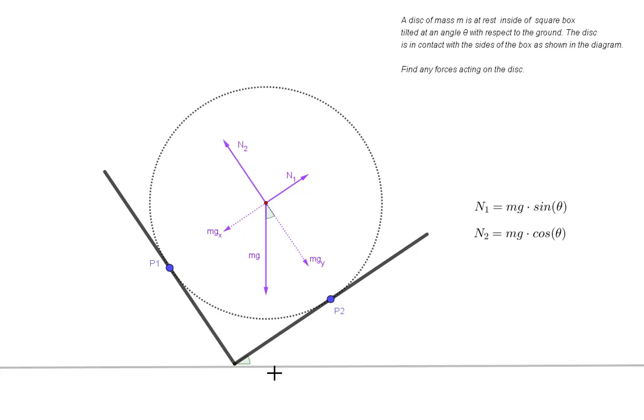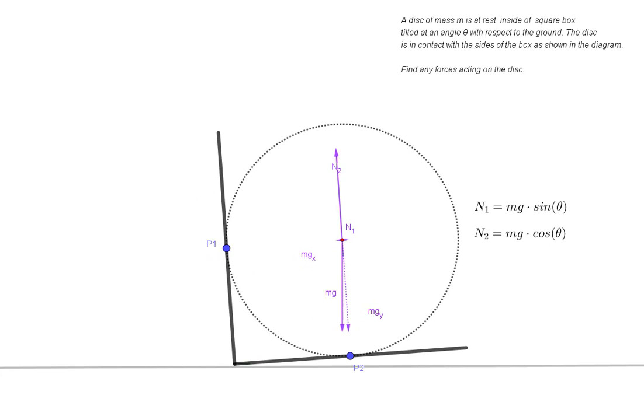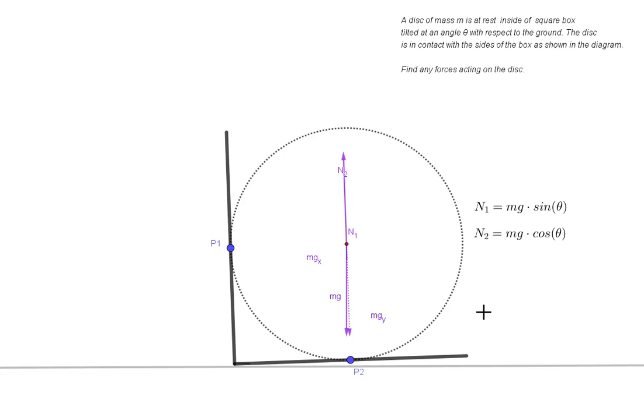But you can also just use a logic check, because right now the box is tilted at an angle, but let's imagine that it was more or less horizontal. So here we have the box is almost tilted at zero degrees. And we know that sine of zero, or sine of a very small angle at least, is approximately zero. And so n1 should disappear.